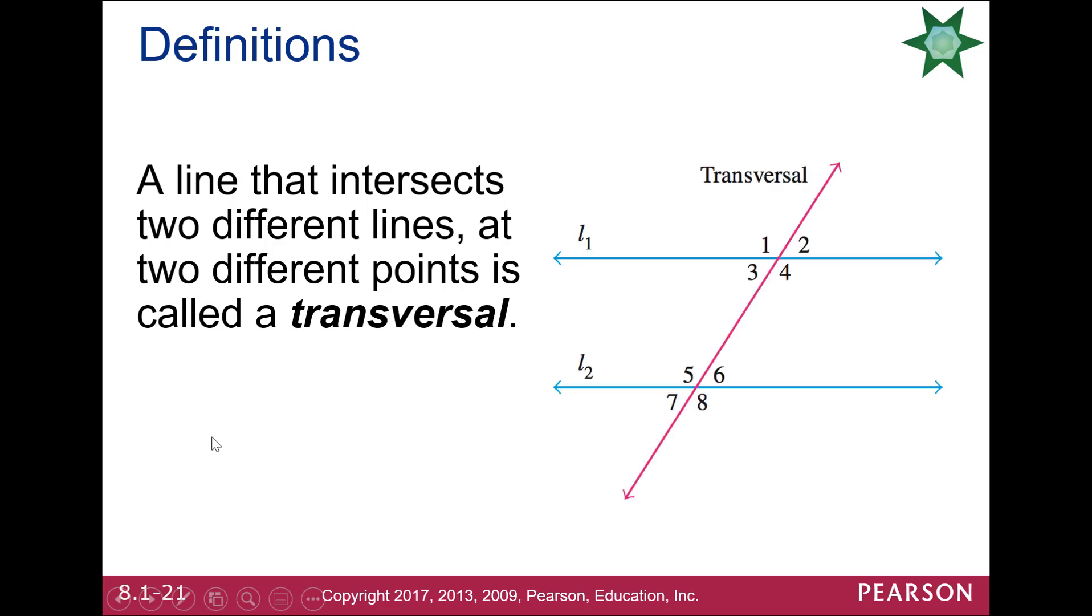You'll also see ones that look like this, where we have two parallel lines, in this case L1, L2, the blue lines, and another line crossing them. That's called a transversal, that basically just means a line crossing, trans and verse, and it forms a bunch of angles. So you can see here some vertical angles, 1, 4, 2, 3, 5, 8, 6, 7.